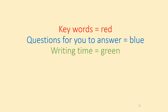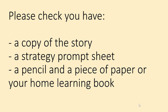Just like in the previous lessons, any important words will be written for you in red. Any questions that I have for you to answer will be written in blue and you'll be given some writing time — this will be written in green. You should have a copy of the story, a strategy prompt sheet, a pencil or pen and a piece of paper or your home learning book. Make sure you've got all those things together, then press pause and continue the lesson.